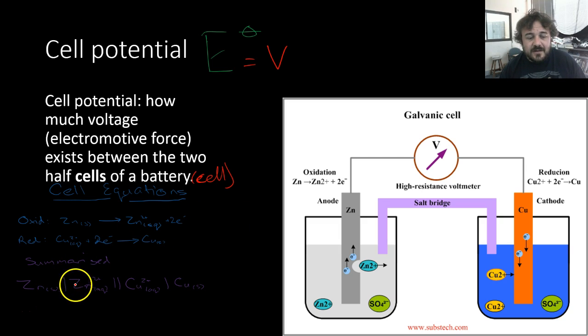So, zinc element, zinc cation, double line, copper cation, and copper element. Now, they all have different parts. What are they? So, this is the oxidation half, and this is the reduction half. And that is the way it goes, oxidation, reduction.